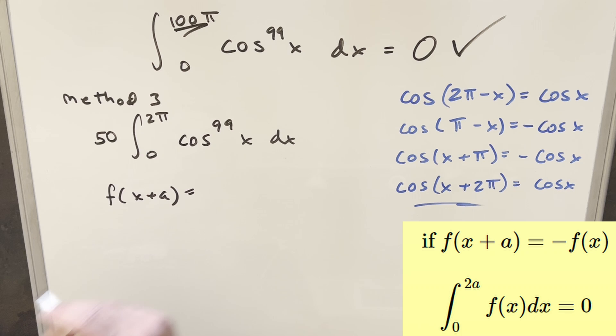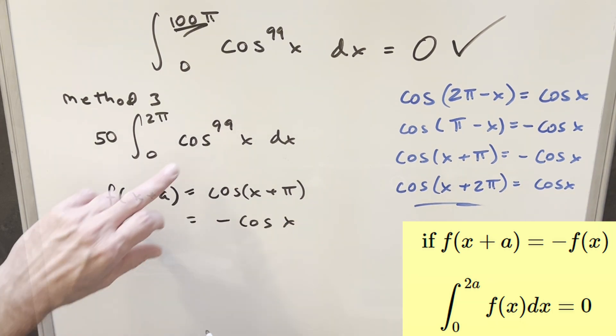So what we want to check is f of x plus pi. So in this case, we're checking cosine x plus pi. And that's going to be this formula right here. We get minus cosine x.